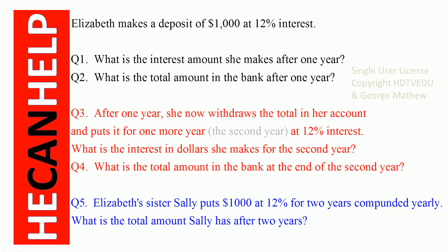Elizabeth makes a deposit of $1,000 at 12% interest. Question number one: what is the interest amount she makes after one year? Question number two: what is the total amount in the bank after one year? So $1,000 at 12% interest for one year — what is the interest amount, and what is the total amount?